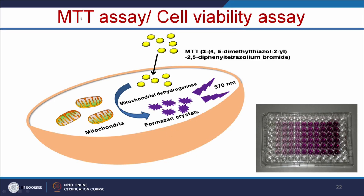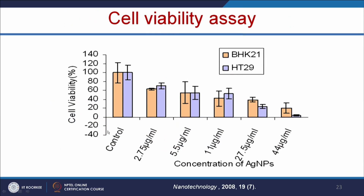The next method is the MTT assay or cell viability assay. MTT solution is normally yellow, and in the presence of mitochondrial dehydrogenase enzyme, it converts to formazan crystals—a purple color. More viable cells produce more color. Cell viability is measured using a microplate reader, and with respect to increasing nanoparticle concentration, cell growth decreases. Different cell lines such as BHK21 and HG21 can be used, and the anticancer or toxicity effect varies with cell line.